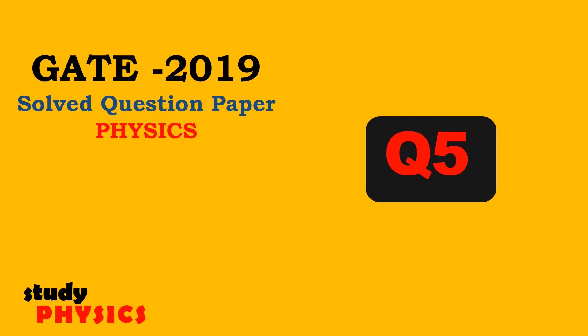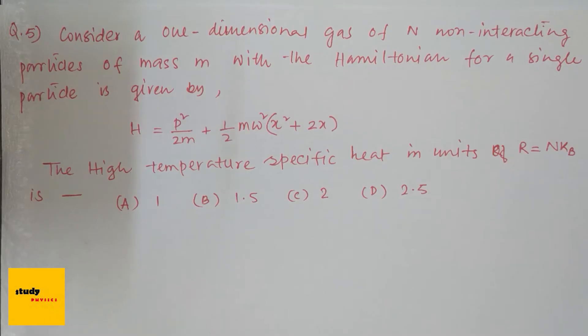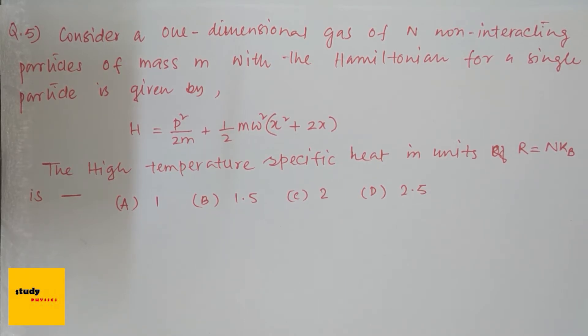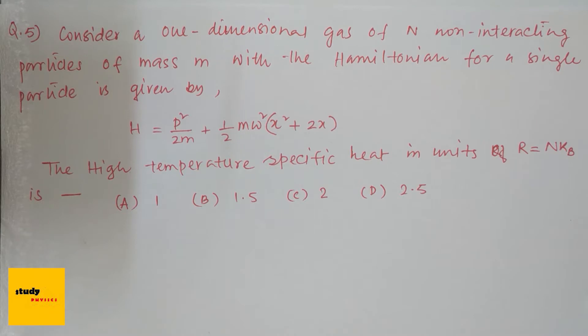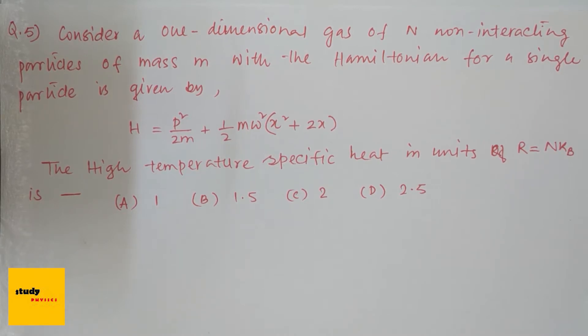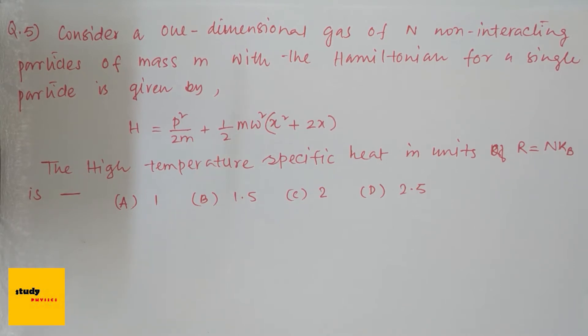Hi everyone, welcome to Study Physics. Here is question 5. The question is: consider a one-dimensional gas of N non-interacting particles of mass m with the Hamiltonian for a single particle given by H equals p squared by 2m plus half m omega squared into x squared plus 2x.